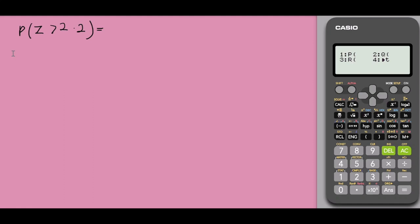So when we want the probability that Z is greater than 2.2, we want the probability on our right-hand side. So let me just illustrate this. 0 is your standard normal mean. 2.2 is somewhere over here. And we want the area on our right-hand side.